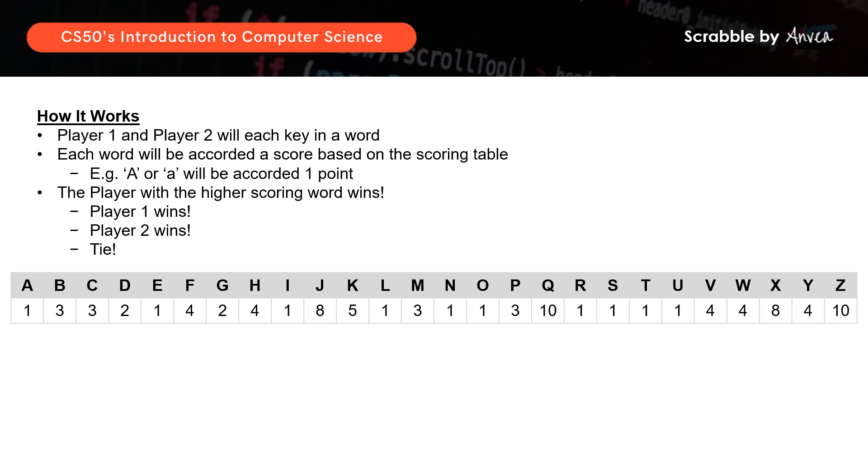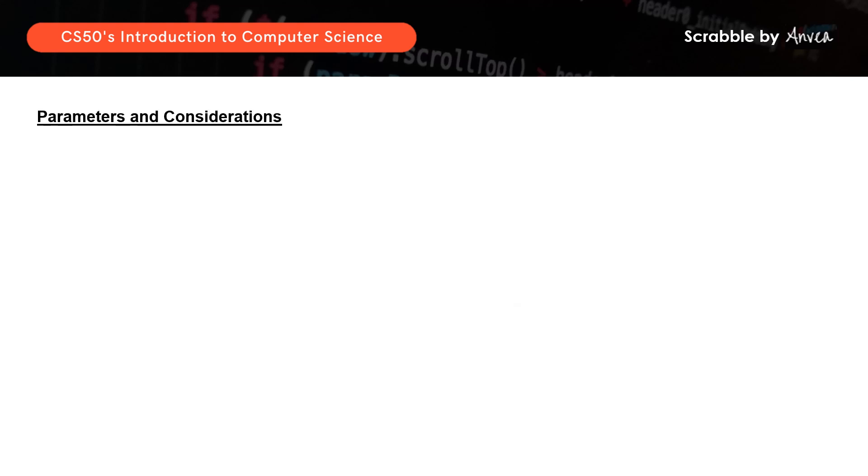So if the score is the same, it will then be a tie. So first, let's look at the parameters and considerations that we have. So player 1 and player 2 will each be prompted to key in a word.